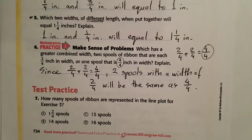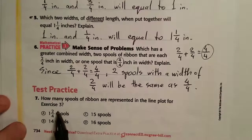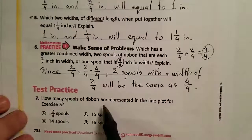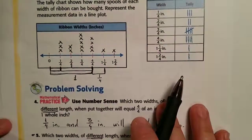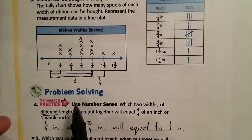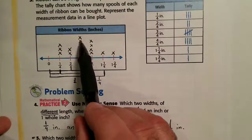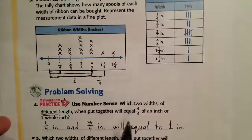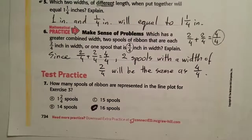Number seven asks how many spools of ribbon are represented in the line plot from exercise three. All we have to do is count the tallies, or count the X's. Counting them all up: one, two, three, four, five, six, seven, eight, nine, ten, eleven, twelve, thirteen, fourteen, fifteen, sixteen — we have 16. Answer D is correct, and we are done with this lesson!